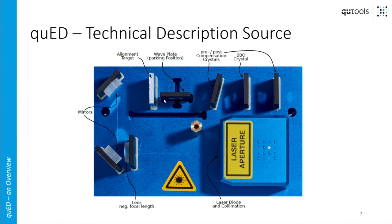The wave plate can be inserted into the beam path or put in the parking position — that's essentially the only thing you can change in the source, since everything else is glued in place to avoid realignment difficulties. You can insert or remove the wave plate to get either the entangled state phi-plus or the product state of two horizontally polarized photons. You can also put it in backwards to get the phi-minus entangled state, which is just another of the Bell states.